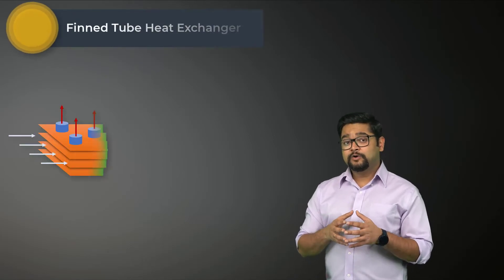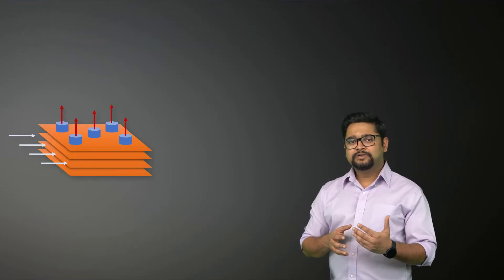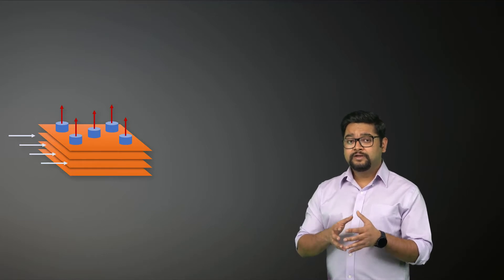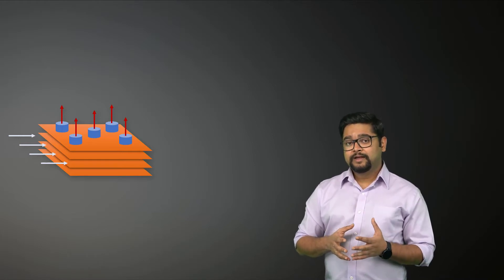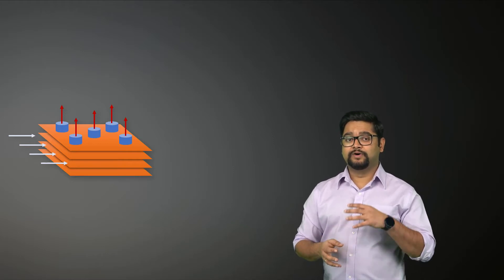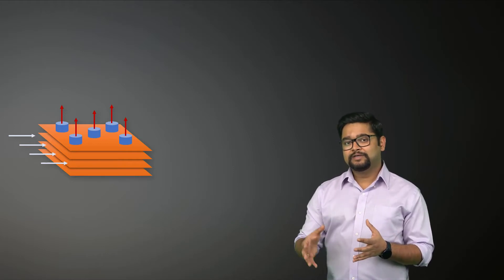Finned tube heat exchangers have tubes with extended outer surface area or fins to enhance the heat transfer rate from the additional area of the fins. They are normally used in applications involving heat transfer between air and a liquid where the heat transfer coefficient is much higher on one side of the heat exchanger than the other.